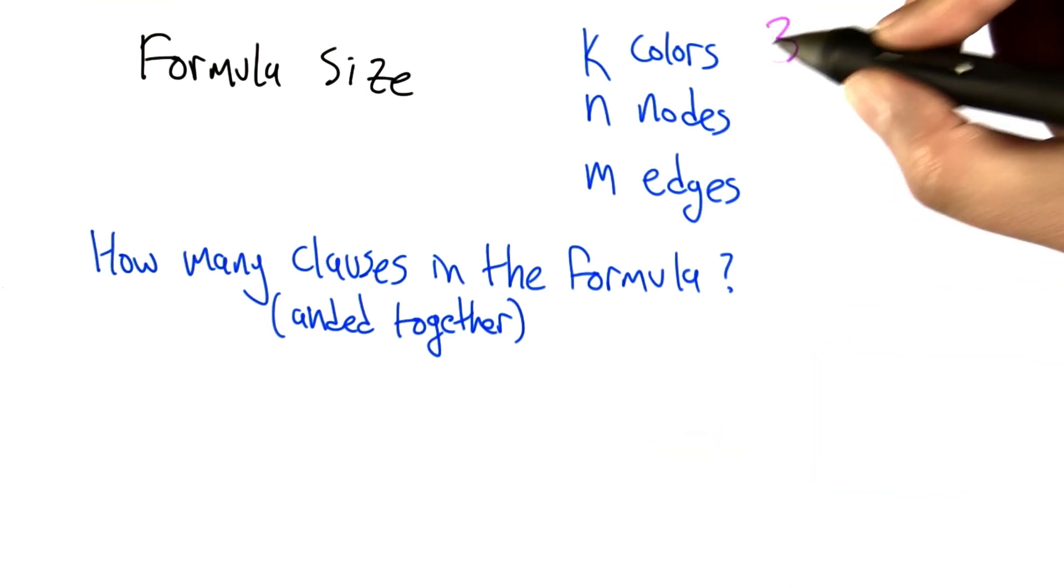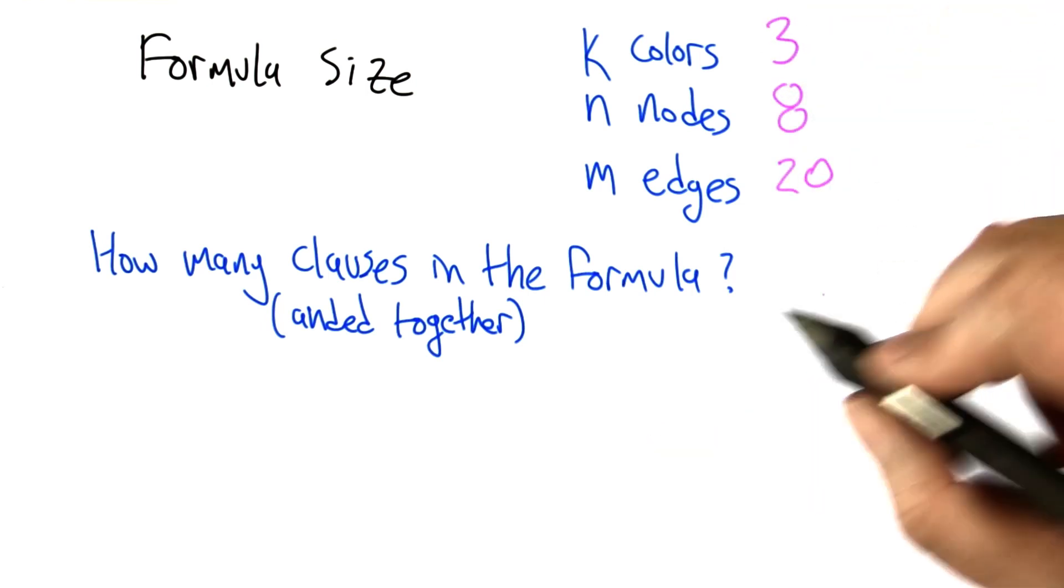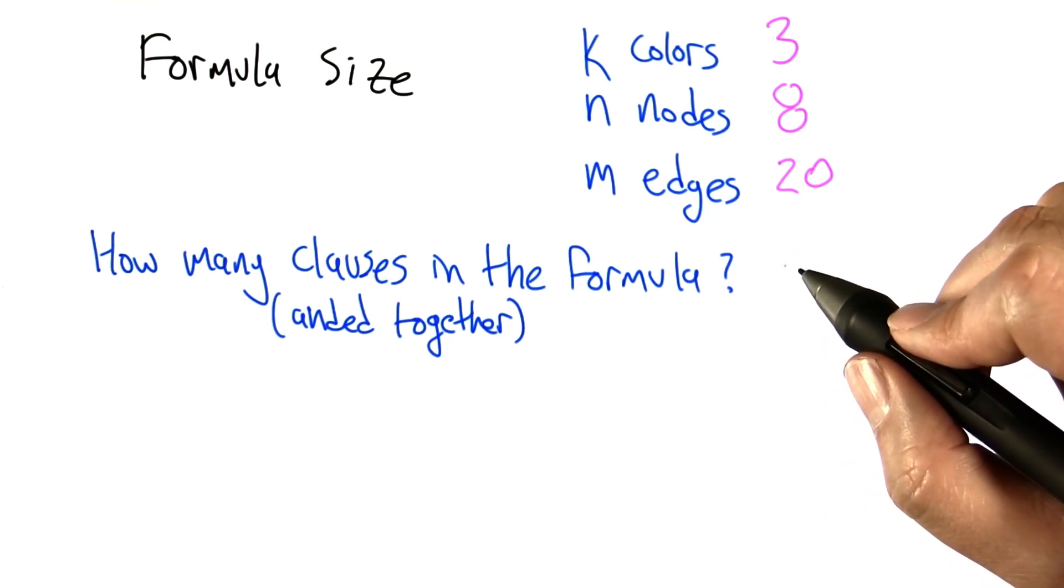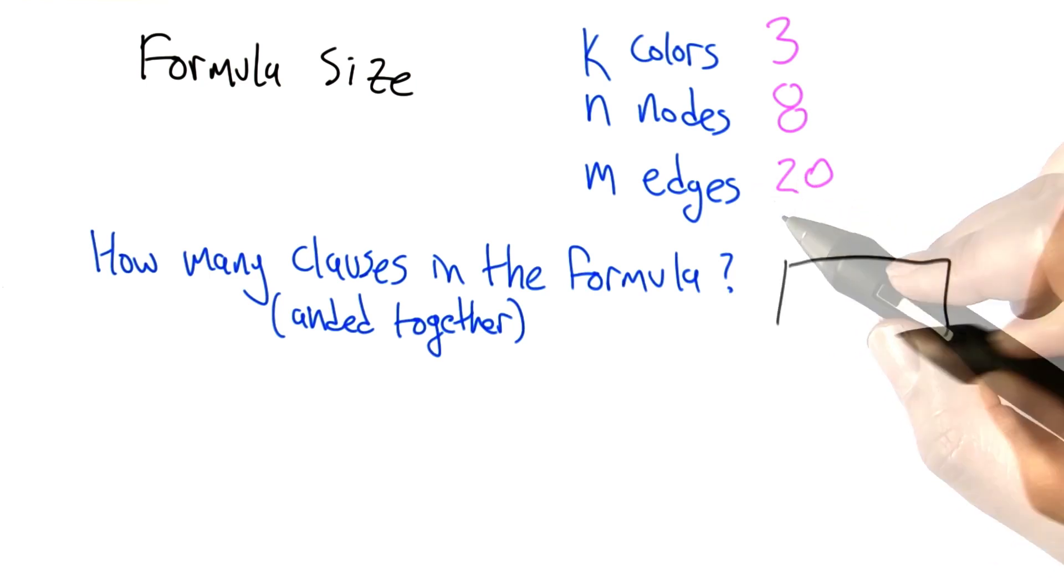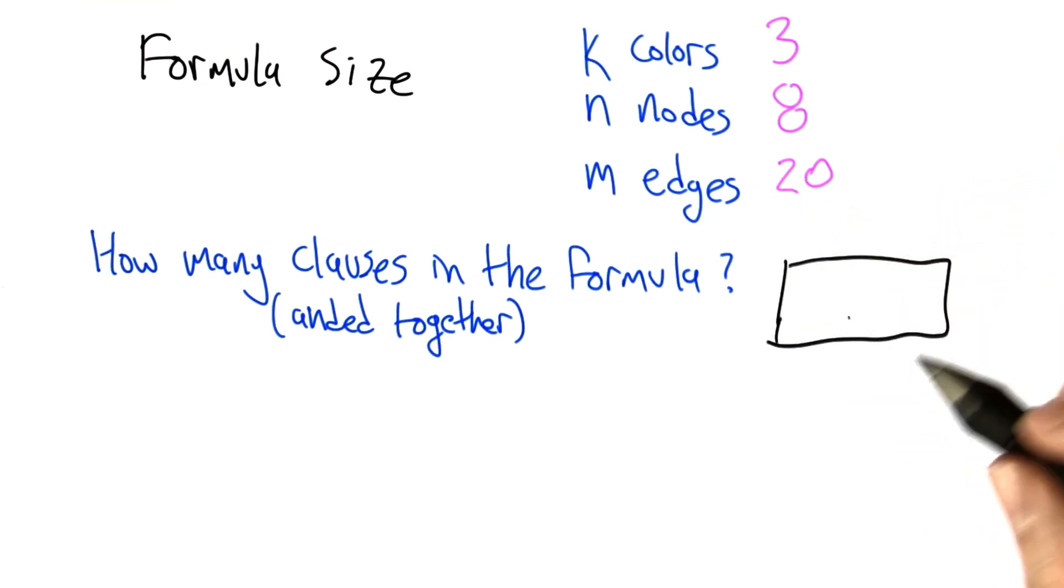Imagine we've got 3 colors, 8 nodes, and 20 edges. How many clauses are in the formula that results from converting this 3-colorability problem into a satisfiability problem? When you have your answer, write it in this box and we'll check it for you.